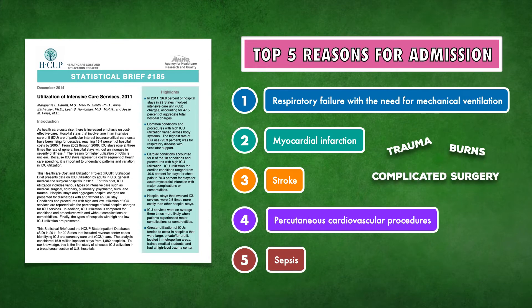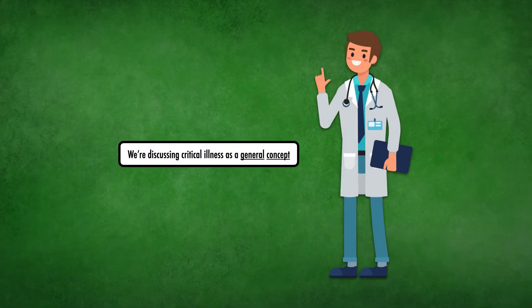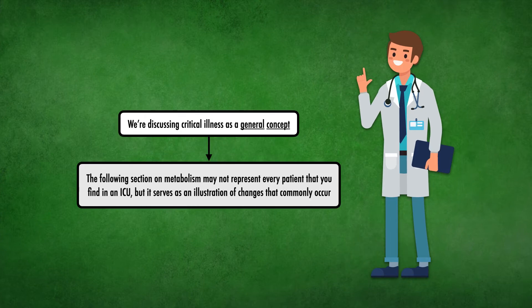Other forms of critical illness include trauma, burns, and complicated surgery. Then within all of the etiologies, there's a wide range of severity. With this in mind, we're discussing critical illness as a general concept. The following section on metabolism may not represent every patient you find in an ICU, but it serves as an illustration of changes that commonly occur.